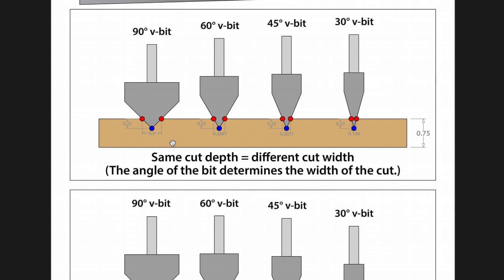This diagram starts off with a V-carve with a set max depth. This would be an instance where you decide to manually enter a max depth. In this example, the max depth is set at 0.25 or a quarter of an inch. What we immediately see is that the wider the angle of the V-bit, the wider the carve we are going to get. The 90-degree V-bit is wider than the 30-degree V-bit, therefore the carve will be wider. The angle of the bit determines the width of the cut.